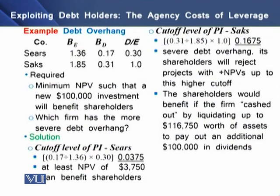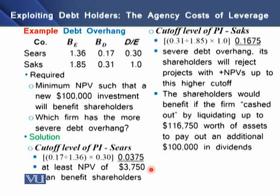We have an example to compute debt overhang. Here we have two companies, Seers and SEC, with their respective values of equity betas, debt betas, and debt-to-equity ratios. The requirement is to determine the minimum NPV such that a new $100,000 investment will benefit shareholders, and which firm has the more severe debt overhang problem. The cutoff level of profitability index for Seers comes to 0.0375, meaning there must be at least an NPV of $3,750 to benefit shareholders.